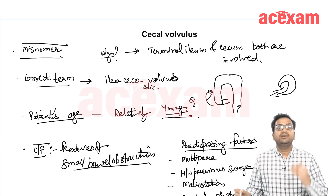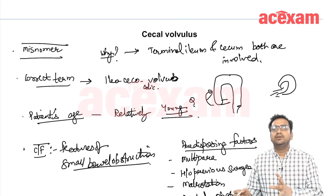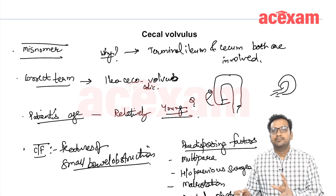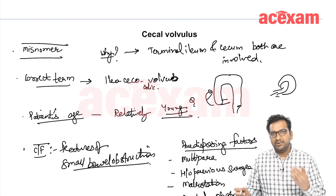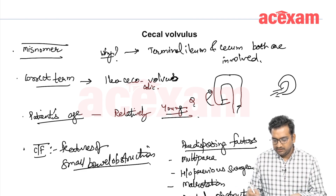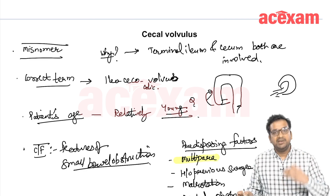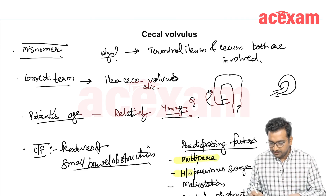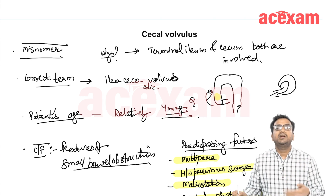What are the predisposing factors? Any factor which increases the laxity of the cecum is a predisposing factor. If a patient is multiparous, that predisposes to cecal volvulus. Any previous surgery, presence of malrotation, or any distal obstruction — these kinds of factors predispose to cecal volvulus.